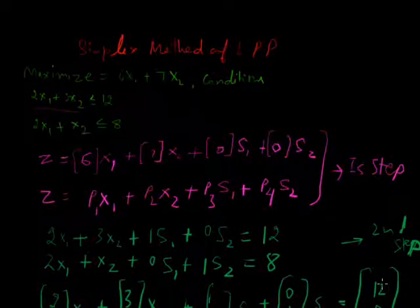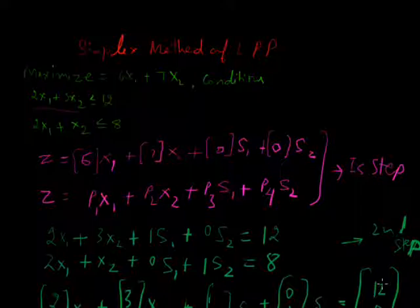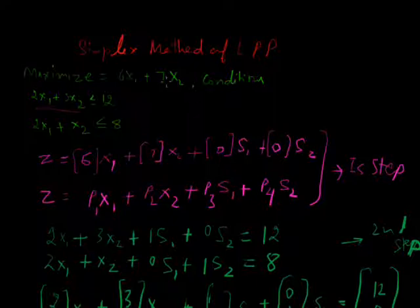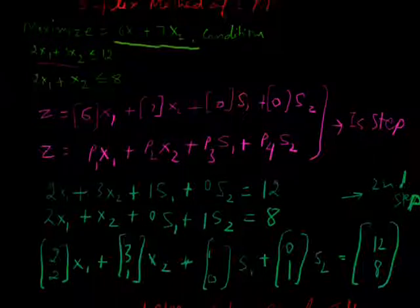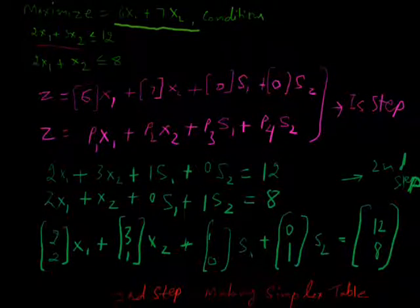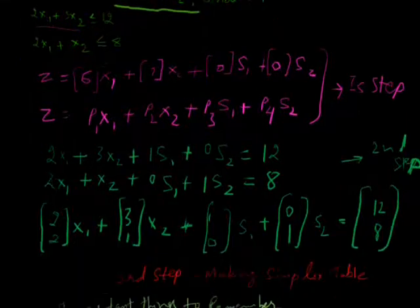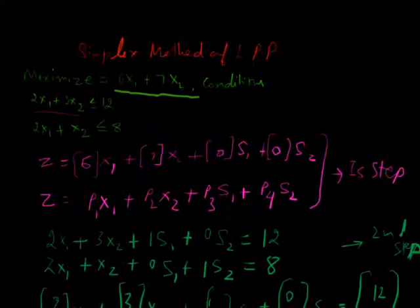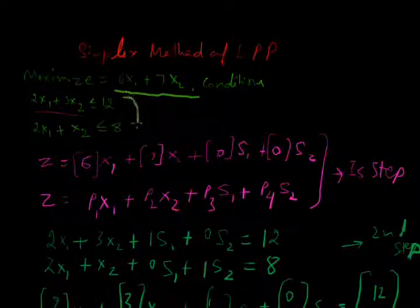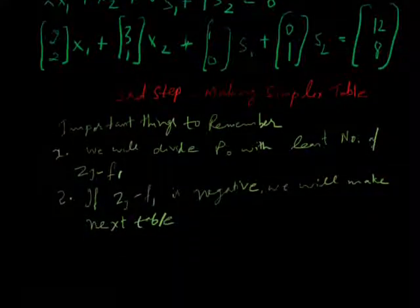In the last tutorial I taught you the first step and second step. In the first step I converted object function into matrix, and in the second step I also converted condition of this object into matrix for calculating the value of x1 and x2 with these conditions.